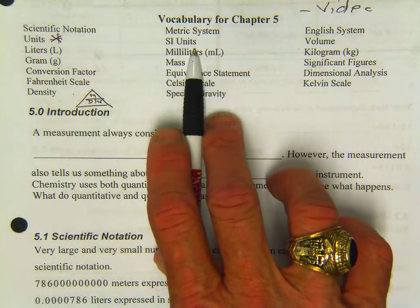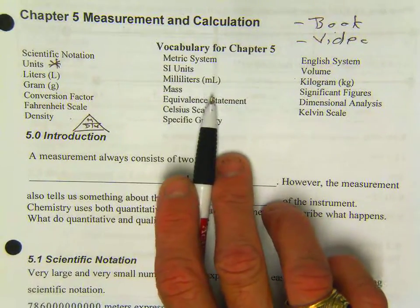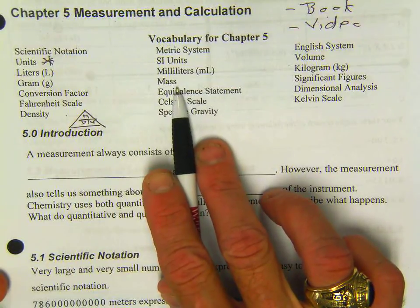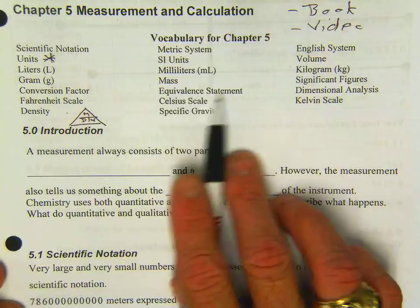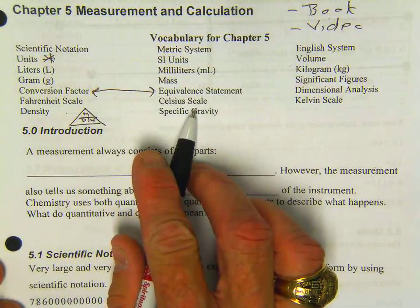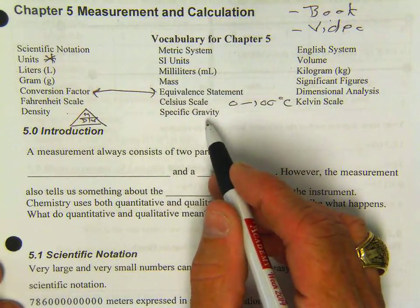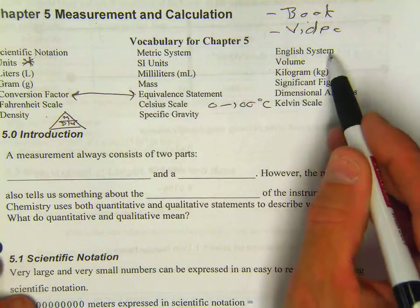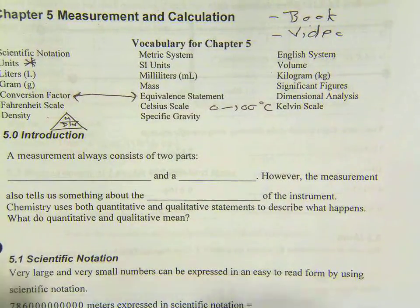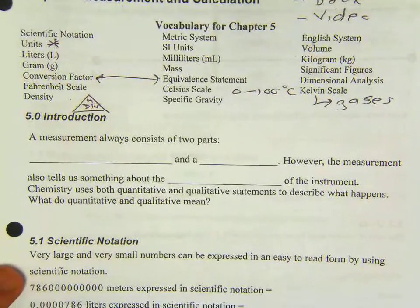We'll learn about the metric system. I'm going to teach you something about SI units, which is system international units. I'll explain what those are later on in this particular handout. mL is typically how volume is expressed. Mass will be quantified in grams. An equivalent statement, I'll teach you about that. That really ties in with conversion factors. Celsius scale is the scale for water from zero to 100 degrees Celsius. Specific gravity is like a comparative statistic. The English system is what we use here. Volume is how much space something takes up. Kilogram, a thousand grams. Sig figs, dimensional analysis, and also the Kelvin scale, which is typically used a lot for gases.